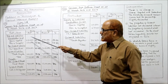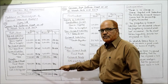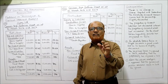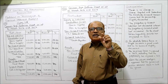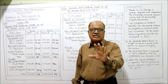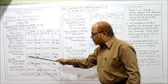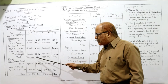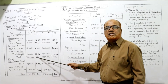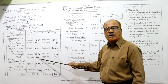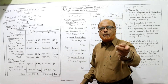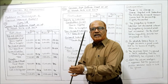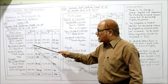In the common size balance sheet, take the total of assets and total of liabilities as the base. What is the total of the liabilities? 11 lakh. This 11 lakh I am taking as 100% base. Take all the values as a percentage based on this 11 lakh, so individual values are taken in the numerator and 11 lakh in the denominator.